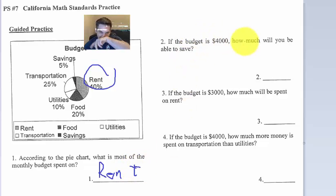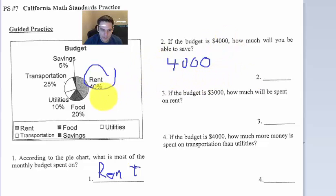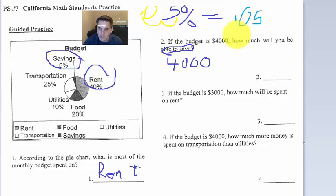All right, if the budget is $4,000, how much will you be able to save? Well, hold on now. $4,000 in percentages? What do we do? Go back to your number set skills. So we got $4,000 and we're going to multiply it by how much we're able to save, right? That's our savings. So take your percentage and make it a decimal by going twice to the left and then multiplying.